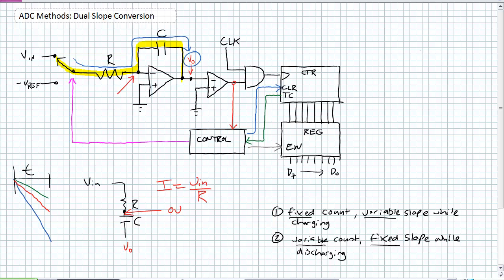How are we generating this number? Look at the output V-O — as it goes lower and lower, what's the output of the comparator? The comparator is seeing a negative voltage on its inverting input, its non-inverting input has zero on it, so it outputs one — true. Negative is always less than ground, so it enables the clock. The clock allows that counter to count up to the fixed maximum terminal count. At that point, the control clears the counter and switches over to the negative reference voltage. Things change now — we're entering the second stage.